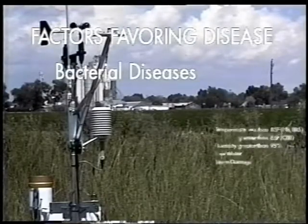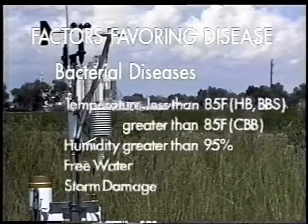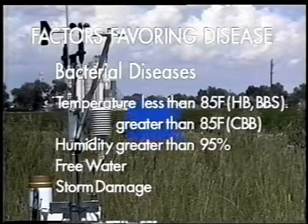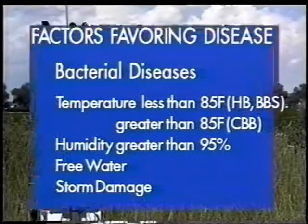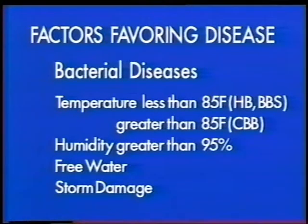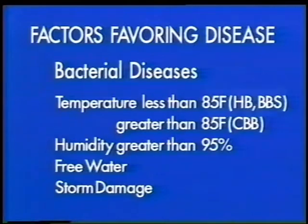Multiplication and infection are favored by low to moderate temperature for halo blight and bacterial brown spot, moderate to high temperature for common bacterial blight, and high moisture for all three diseases.